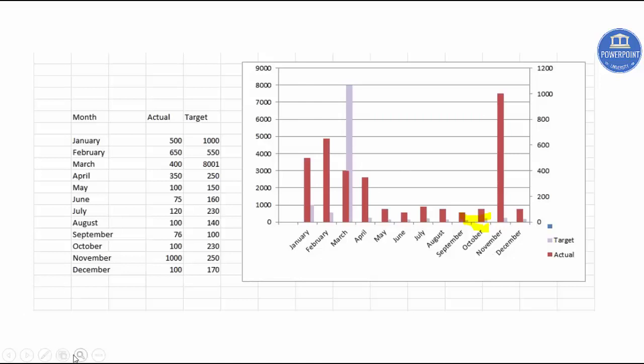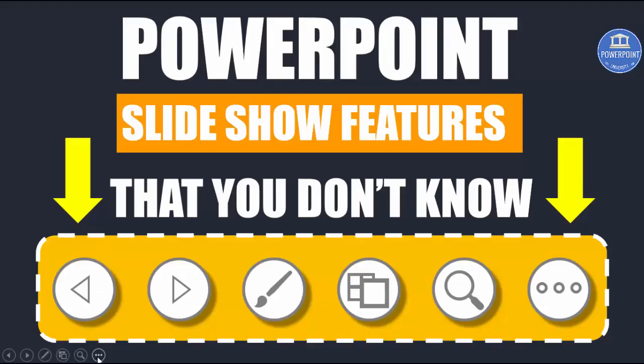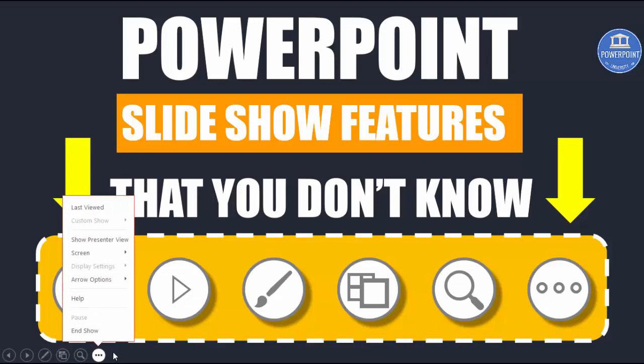You have two options: black screen or white screen. If you click black screen, the slides will not be visible at all — it will be a completely black screen. To show the slide again, just click the mouse and it comes back. If you prefer a white screen instead, go to screen and select white screen — again, just click to bring the slide back. You can also hide the mouse arrow if required. And the 'last viewed' option takes you back to whichever slide you last viewed.